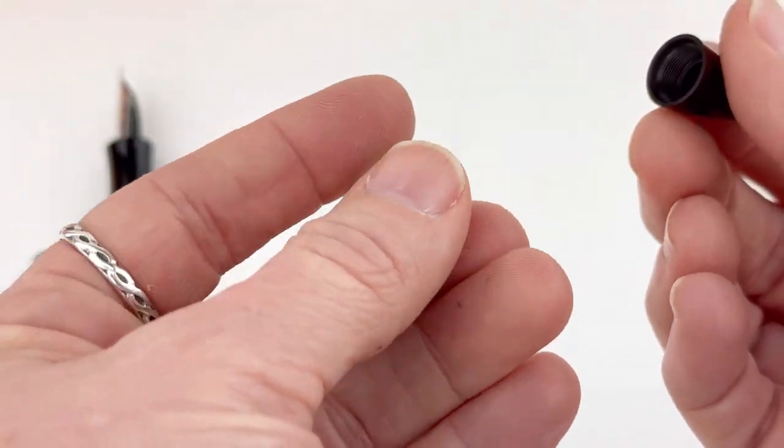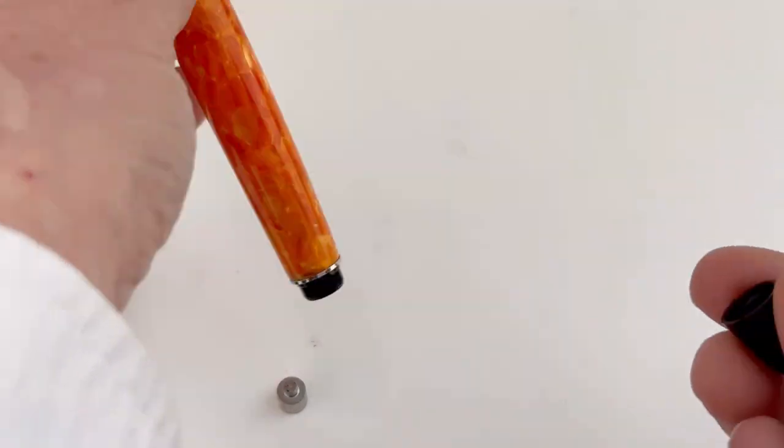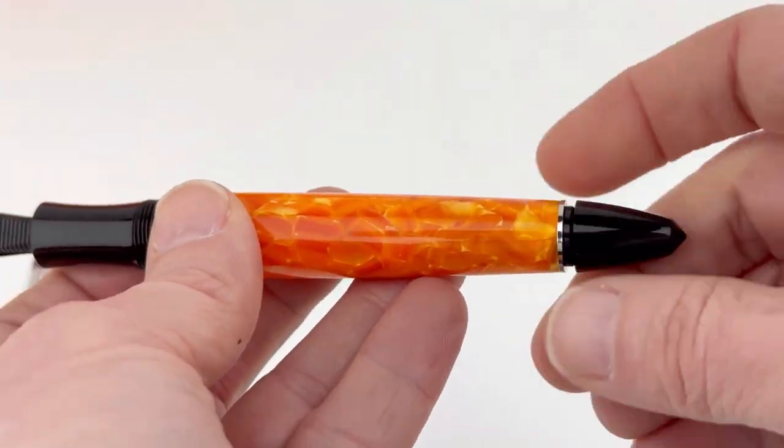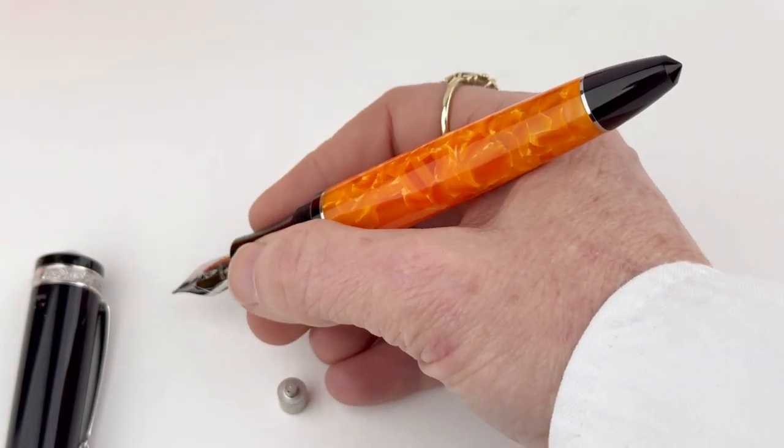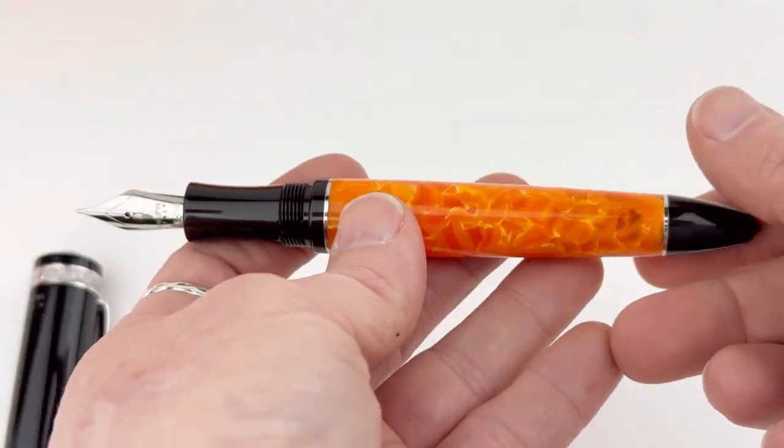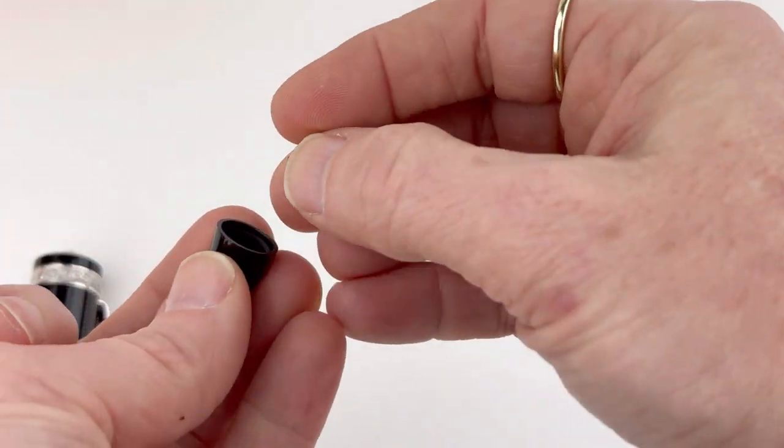With the Right Balance system, you just unscrew that back black cap. Inside, there's a small weight that you can remove if you like to have more of the weight towards the front of your fountain pen, or you can put that weight back inside if you like to have a little bit more weight towards the back.